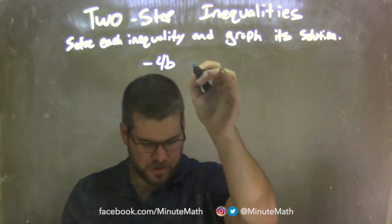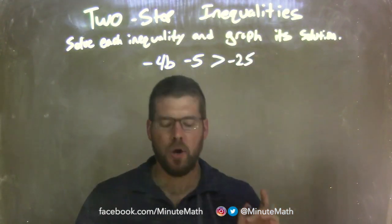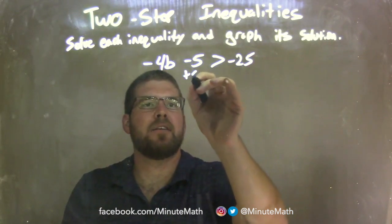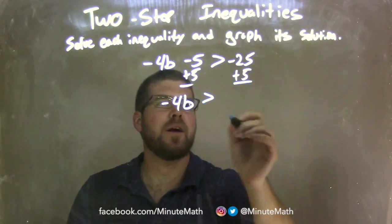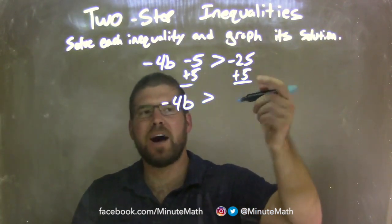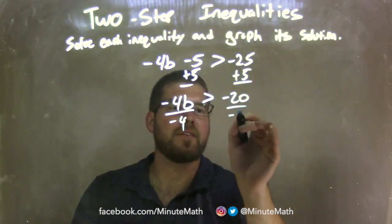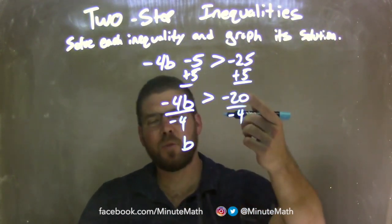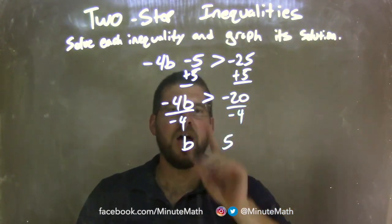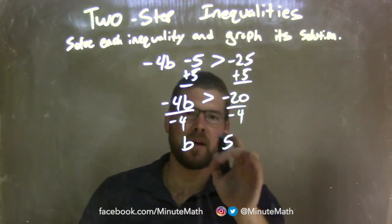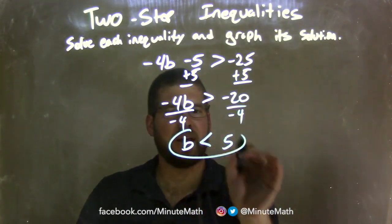Negative 4b minus 5 is greater than negative 25. My first step: add 5 to both sides, leaving me with negative 4b is greater than negative 25 plus 5, which is negative 20 on the right. I then divide both sides by negative 4, leaving b by itself on the left, and negative 20 divided by negative 4 is positive 5. Since I divided over the inequality by a negative, I flip the sign — b is less than positive 5.